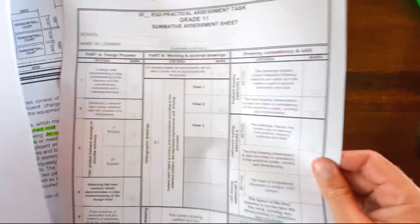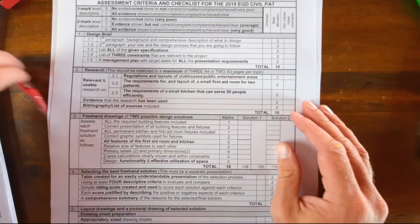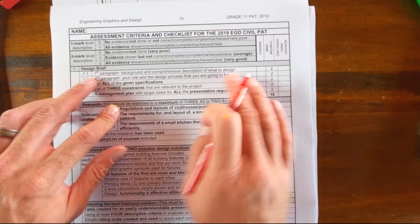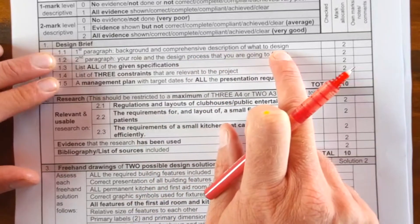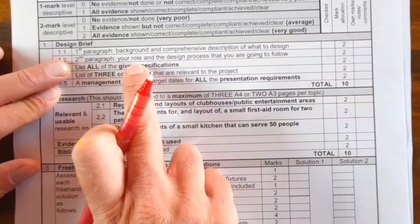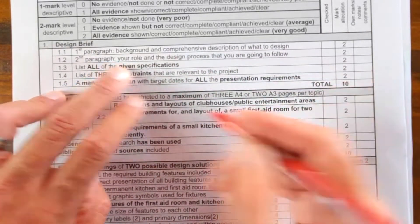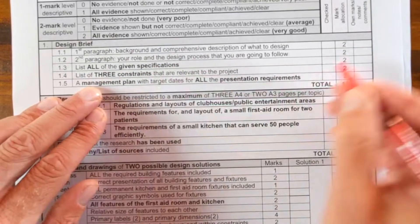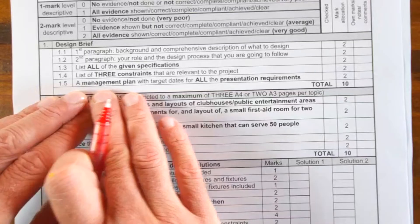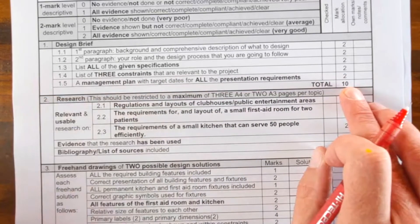Before I go on to the management plan, let me just show you your summative assessment sheet. Now this is right at the back of your PAT. And this is the actual document which is going to be used for you to gain your actual marks. And you can always kind of get an idea of where you are at. Again, make sure your numbering corresponds with this sheet. The first paragraph: background and comprehensive description of what to design—that's going to be awarded two marks. Second paragraph: your role in the design process. And now you are going to follow—that's again, I'm going to do research, I'm going to do concept designs, your role and the process. Then all the specifications which I've discussed, three constraints. If you adhere to these, you're going to get two, two, two, two, and you're going to end up with full marks here. The last one is the management plan with target dates of all presentation requirements. If you've done that, it's going to be 10 out of 10.